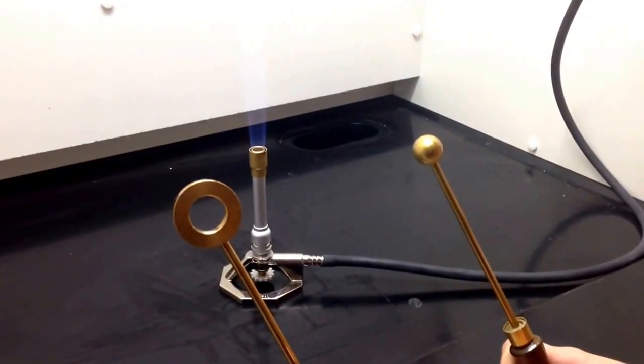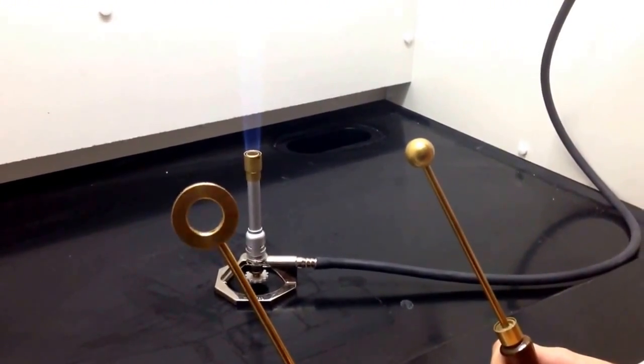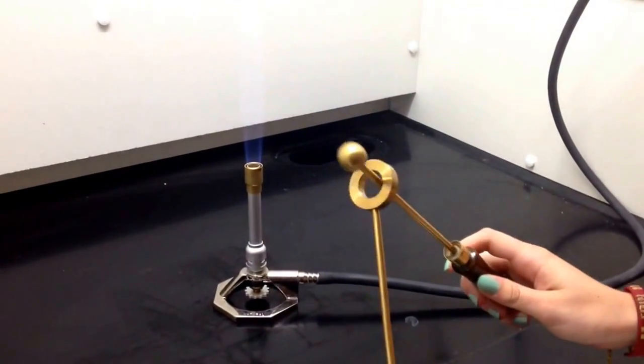Most metals expand when they are heated and they contract when they cool down. Here's an example of brass doing just that.